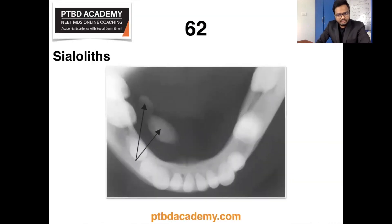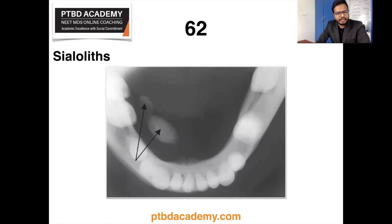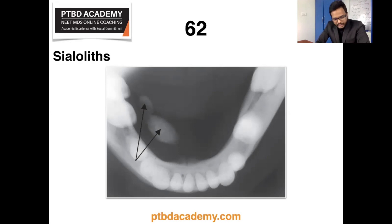Moving on to sialolith of the submandibular gland. A dumbbell-shaped sialolith on the mandibular occlusal view, with arrows representing a two-node architecture, is seen radiographically. Sialoliths are stones found within the ducts of salivary glands. Submandibular glands are most commonly involved — around 83 to 94% of cases — followed by the parotid gland at 4 to 10%, then the sublingual gland.